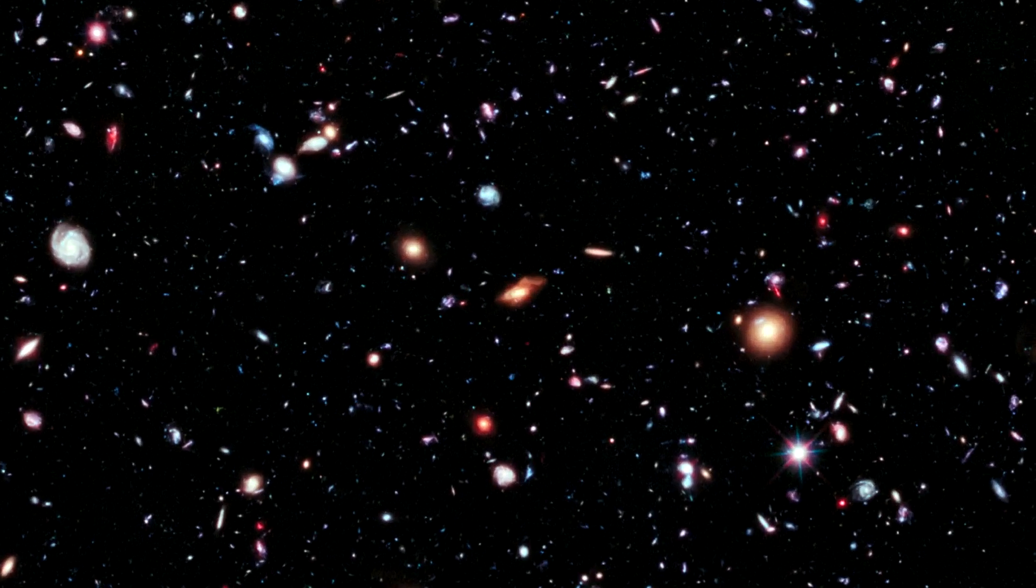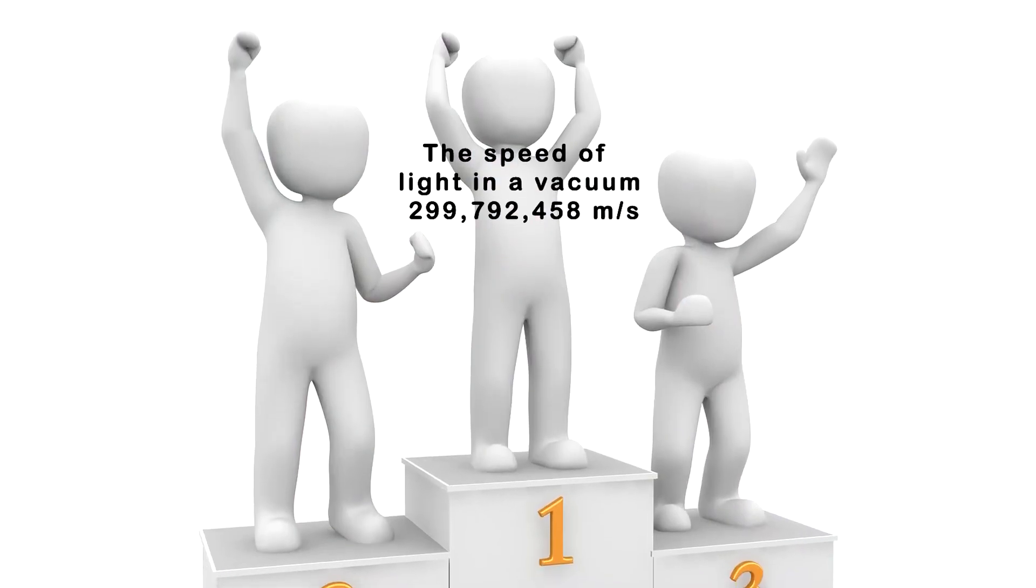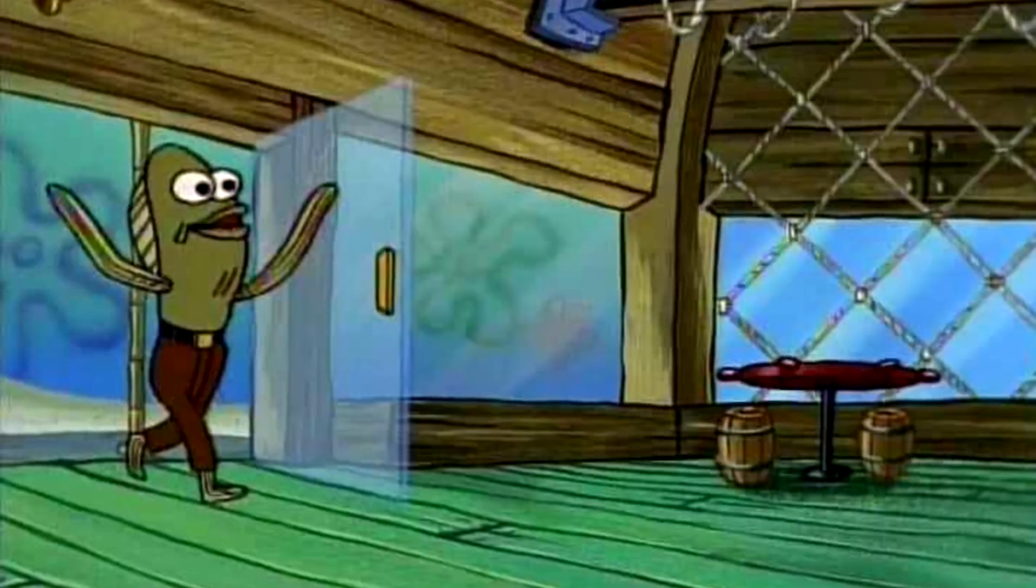When people talk about the speed of light, they usually mean the speed of light in a vacuum, which is constant and pretty much unbeatable. Nothing is faster than light. But when light enters a transparent medium like, say, water or glass, its speed is divided by the refractive index of the medium, which is always greater than one.